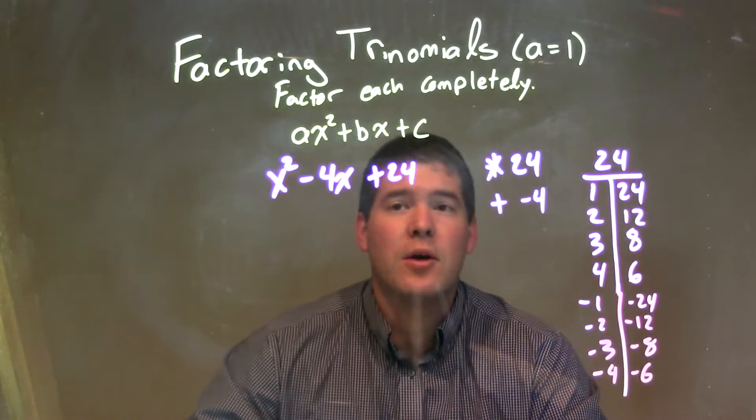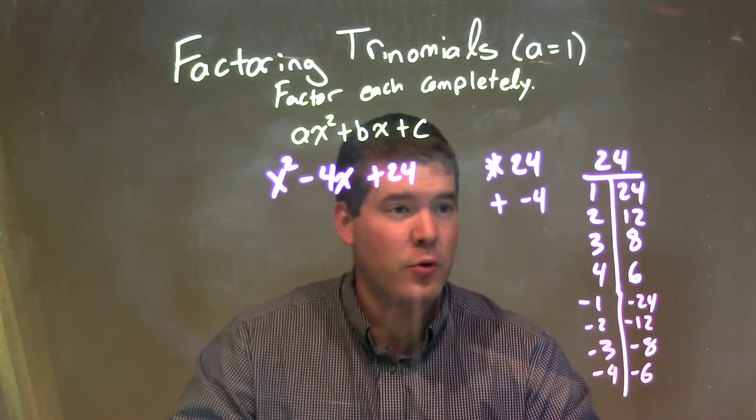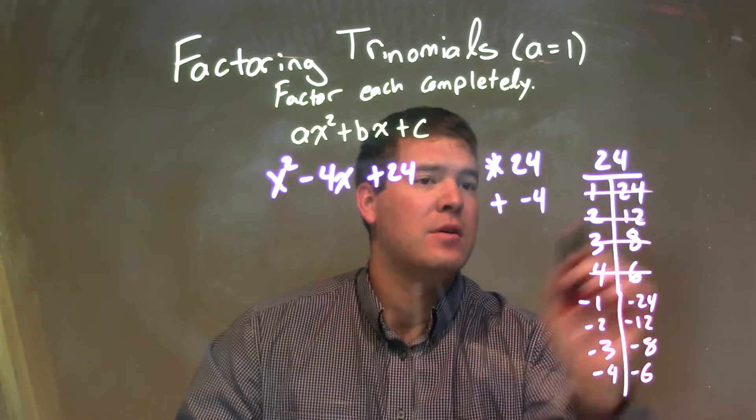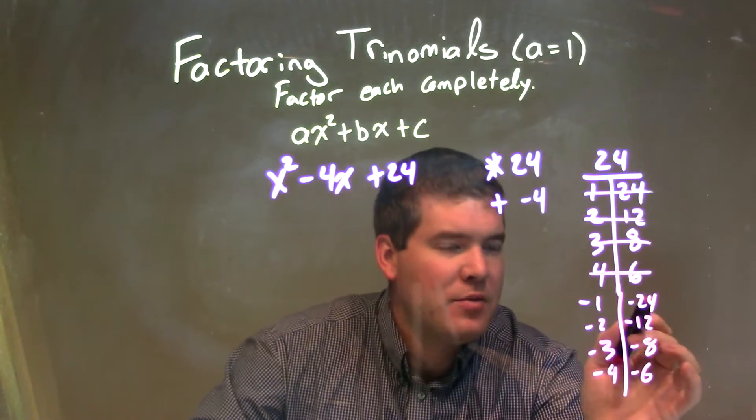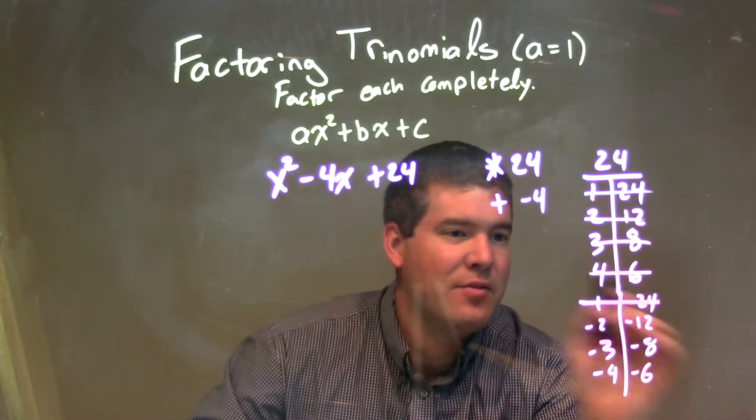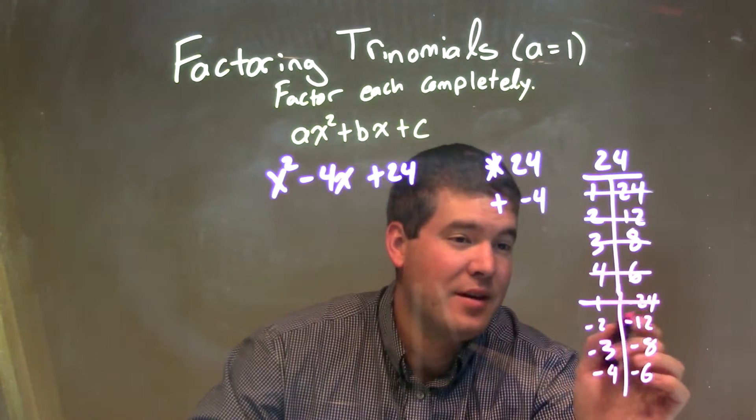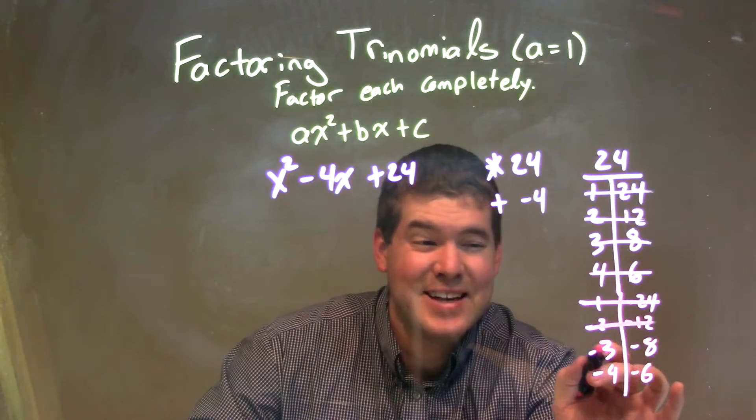So now I want to go through and say, what two of these numbers can add to be a negative 4? Well, it can't be any of the positive ones. You can't add positive numbers and get a negative number. So negative 1 plus negative 24, no, that's negative 25. Negative 2 plus negative 12 is negative 14. Negative 3 plus negative 8 is negative 11.